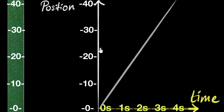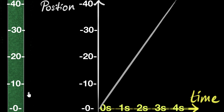Now that we understand position time graphs, let's see if we can draw one for the snail. If we go back to our animation, the difference is the snail is a lot faster than the rabbit, but it's also traveling with uniform speed — it also has a constant speed, which means its graph should also be a straight line. But since it's faster, it's going to be a little different. Can you pause the video and think about or visualize how different it would be?